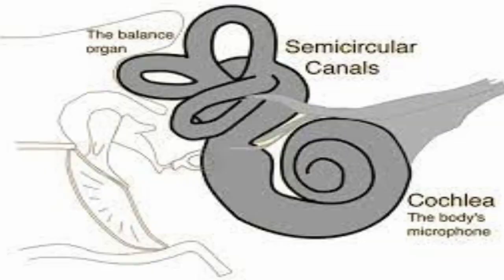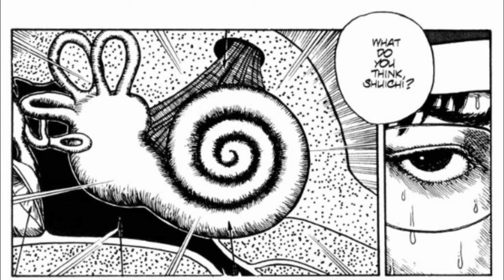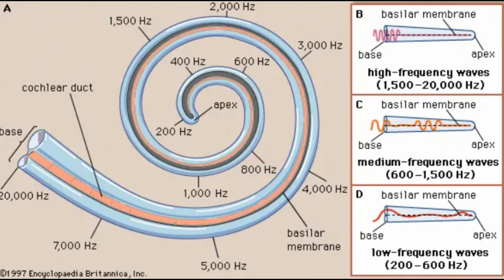Moving through to the inner ear, we have two main parts: the cochlea, which is the hearing portion, and the semicircular canals, which are the balance portion. The cochlea is a strange spiral-shaped structure — shaped almost like a snail — and is divided into two chambers by a membrane, both of which are filled with fluid. When vibrations are sent through, it causes small hairs along the lining of the membrane to vibrate and send electrical impulses to the brain.